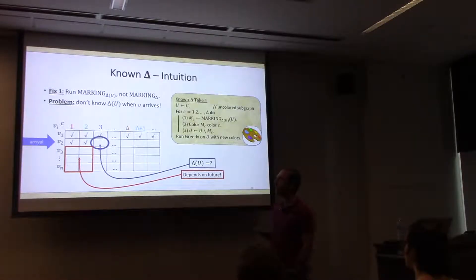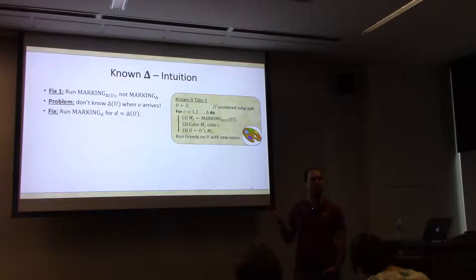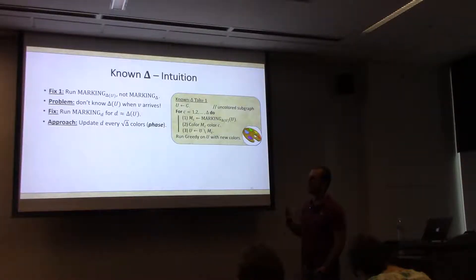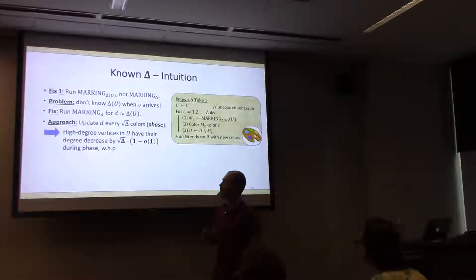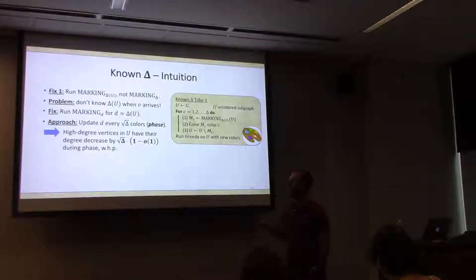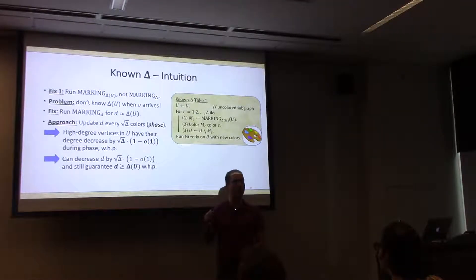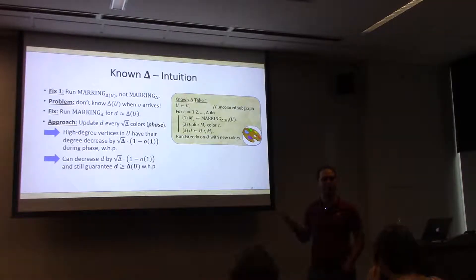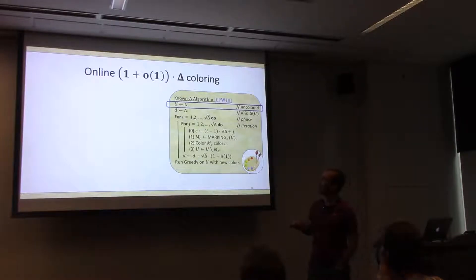From this, high-degree vertices will have their degree decrease by roughly root-delta during the phase with high probability, so we can decrease the upper bound D by roughly root-delta every phase. Here's the overall algorithm: U is the uncolored graph, D is an upper bound on its max degree initialized to delta. For root-delta phases, each made of root-delta iterations with a distinct color each, we run Marking-D on the uncolored graph, color the output matching, and remove it. At the end of each phase, decrease D by roughly root-delta. Finally, run greedy on the remaining uncolored graph.